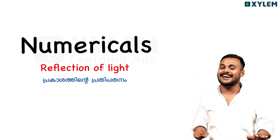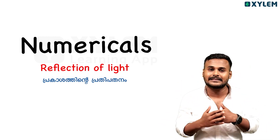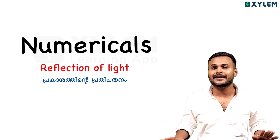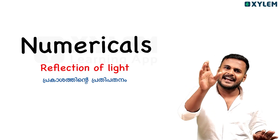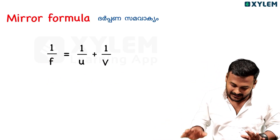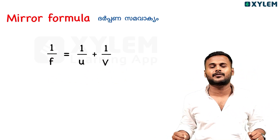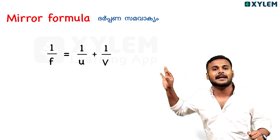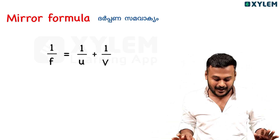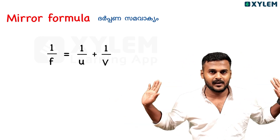This is the major formula — the mirror formula. There is a mirror formula. If you look at the minus sign, this is the first formula. The mirror formula is: 1 by F equal to 1 by U plus 1 by V.